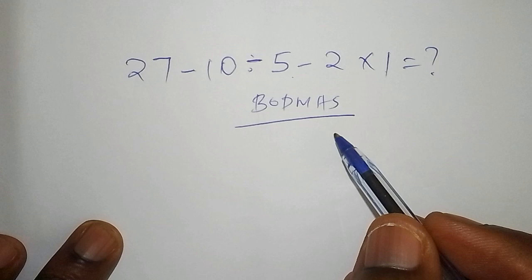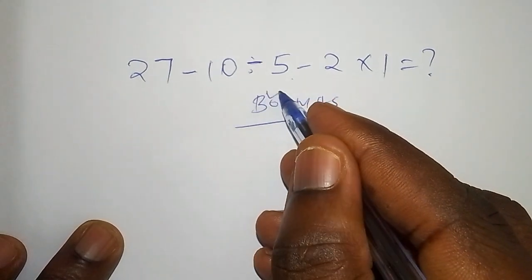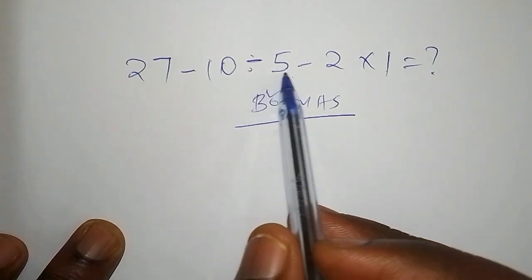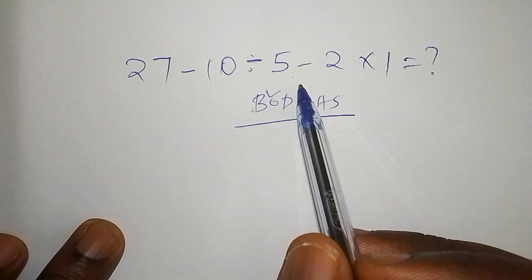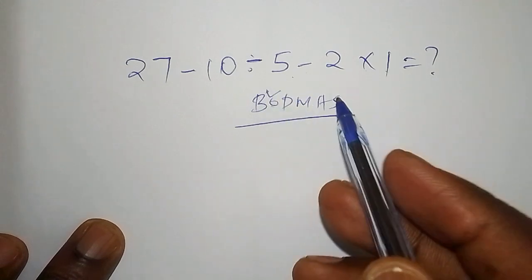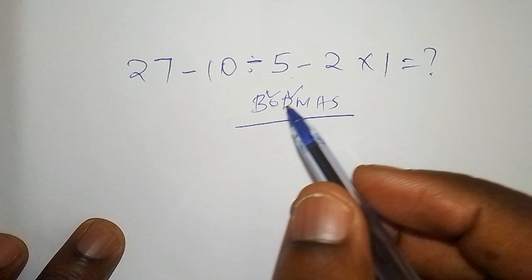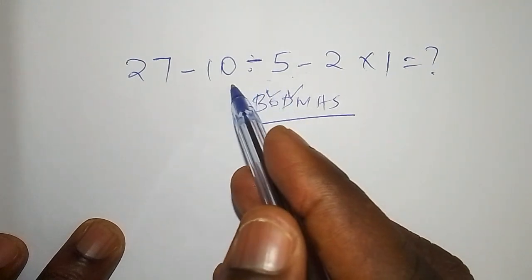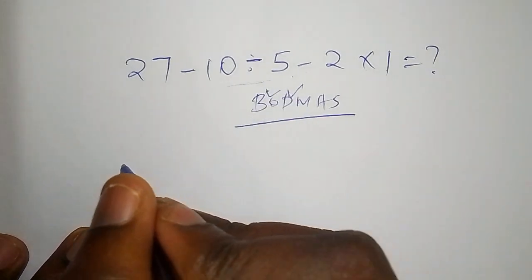Now B stands for the bracket. When you check this math problem we do not have the bracket, so B we rule it out. Then we go to O, O stands for Of. D stands for division, meaning that you must work out this division 10 ÷ 5.